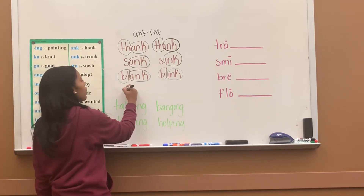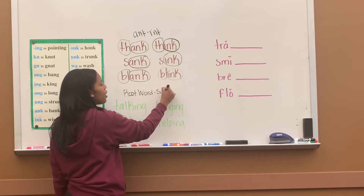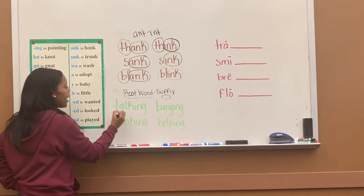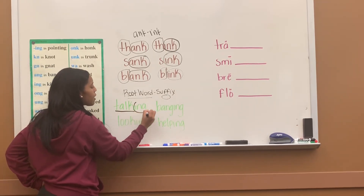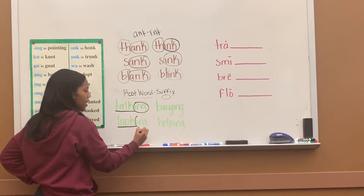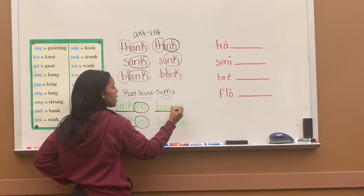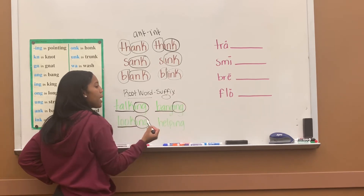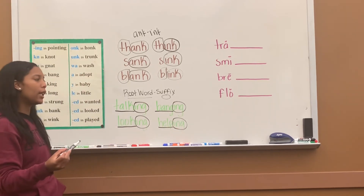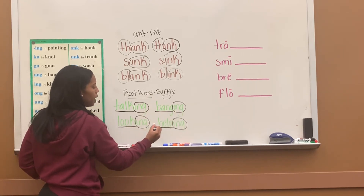We also learned what's called a root word, which is the word we start with, and a suffix, which is what we attach to the end of a word. We underline the root word and circle the suffix. Root word 'talk,' suffix '-ing,' the word is talking. Root word 'look,' suffix '-ing,' the word is looking. Root word 'bang,' suffix '-ing,' the word is banging. Root word 'help,' suffix '-ing,' the word is helping. Let's read them again: talking, banging, looking, helping.